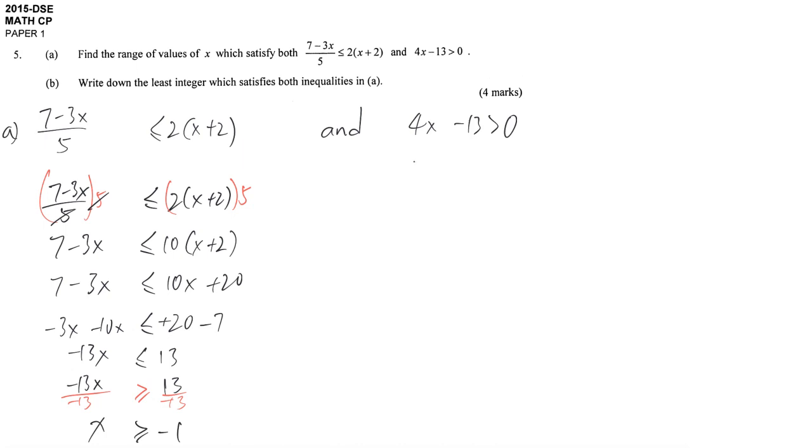The right hand side is much easier. Just put x on one side, and then divide both sides by 4. Again, 4 is positive, so no change in direction. x is larger than 13 over 4, which is 3.25.